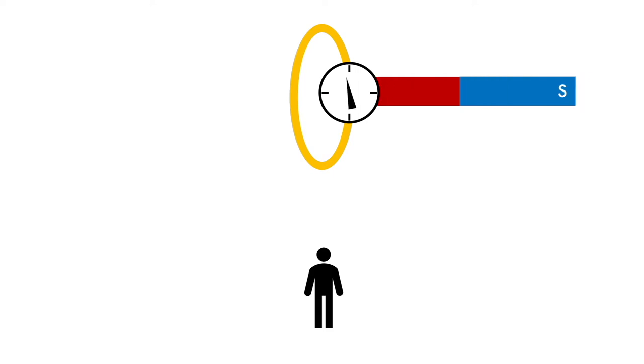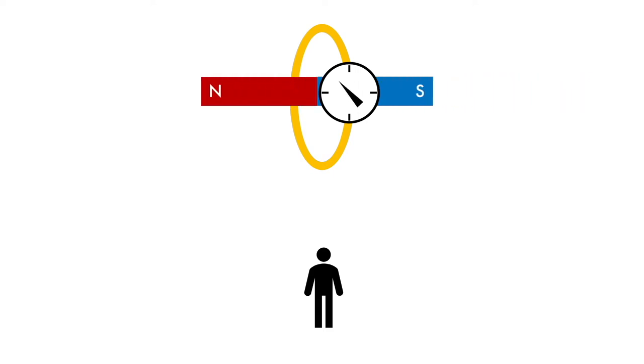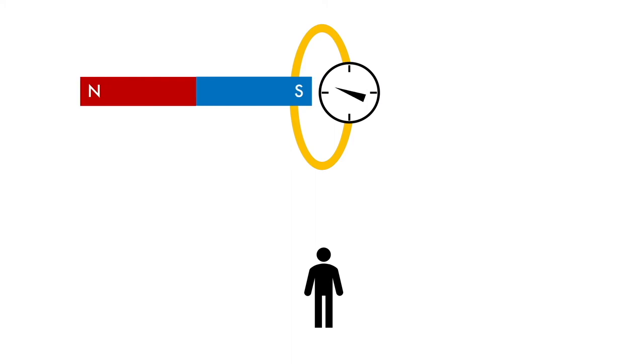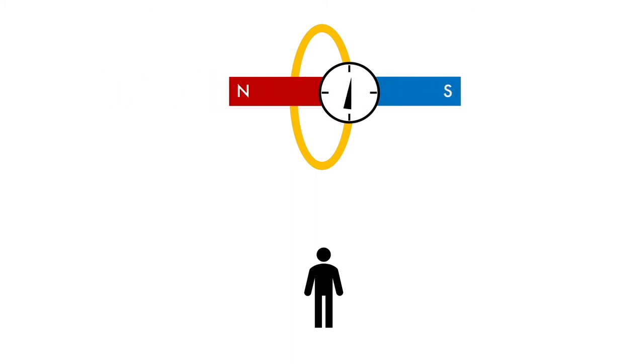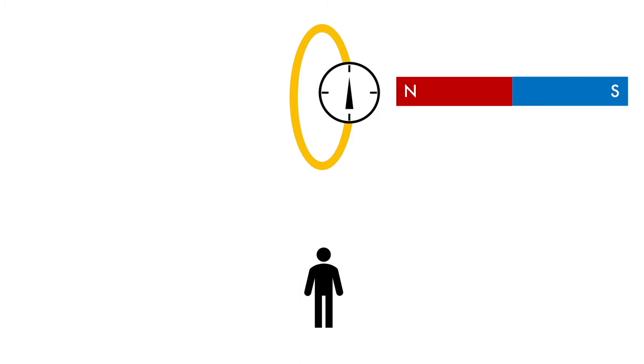Going back to the postulates, consider a galvanometer attached to a closed-loop conductor. When current flows one way, the needle deflects to the right; when current flows the other way, it deflects to the left. If we have a bar magnet and a stationary observer, the observer notices a deflection when the magnet passes through the loop with nearly constant velocity, due to electromagnetic induction. A changing magnetic flux results in an induced current through the loop.